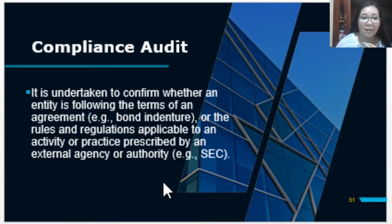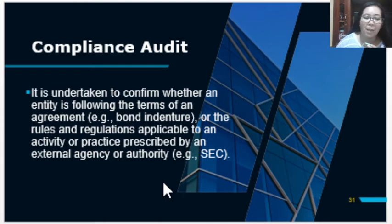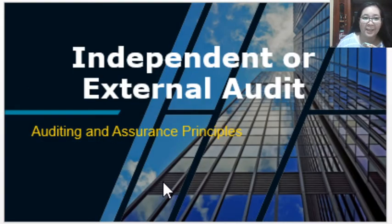Compliance audit is undertaken to confirm whether an entity is following the terms of an agreement — for example, a bond indenture, which states when the entity will pay interest to their creditors, the interest rate, and the repayment of the original amount loaned or invested. It also covers other rules and regulations applicable to the activity as prescribed by an external agency, such as the SEC, verifying if corporations followed guidelines for how to operate and register. Those are the key aspects of compliance audit, and we will now proceed to the next type — independent or external audit.